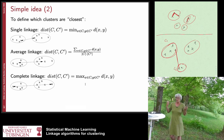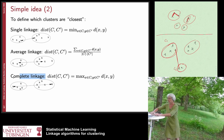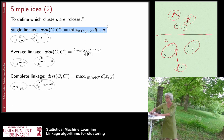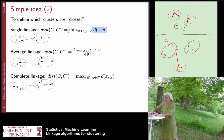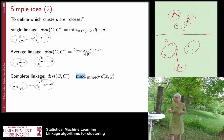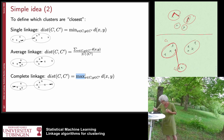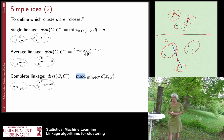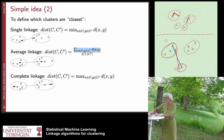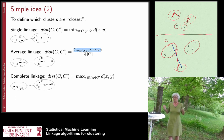The opposite is complete linkage. Instead of taking the minimum, we take the maximum, which results in a different distance function used in complete linkage. In this figure, the distance between clusters C1 and C2 would be given by the furthest pair of points. Between single linkage and complete linkage, there's average linkage — you look at all pairs of points, compute the distance, take the mean, and this is the distance between the two clusters.